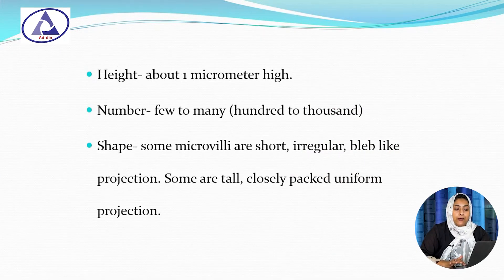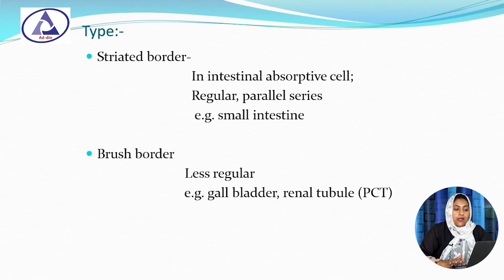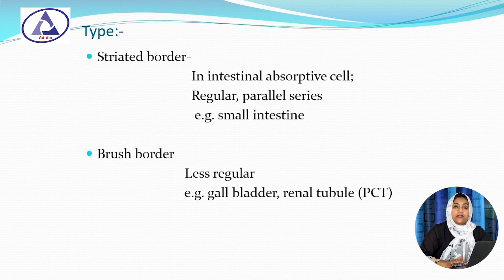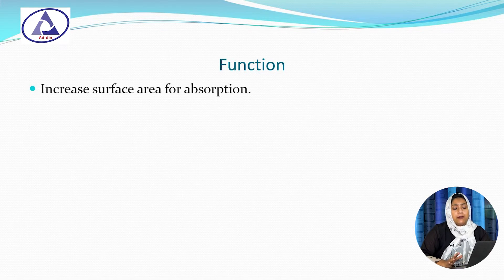Each microvilli is about 1 micrometer in height, with a number of 100 to 1000 in each cell. Some microvilli are short, irregular, and bleb-like projections; some are tall, closely packed, and uniform projections. There are 2 types of microvilli: striated border and brush border. The striated border is found in intestinal absorptive cells as a regular and parallel series within the small intestine. The brush border is less regular and present within the gallbladder and proximal convoluted tubule. The overall function of microvilli is to increase the surface area for absorption.